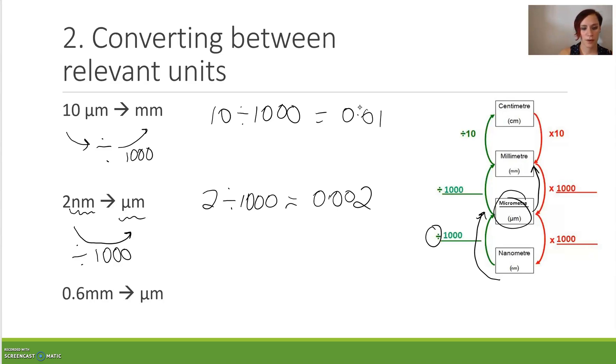Next one, we are going from millimeters to micrometers, which means we are going from a unit that is bigger down to the smaller unit, which means we are doing a multiplication sum this time. So we are going to have to go 0.6 times, and we know that there are 1000 micrometers in a millimeter, so times 1000. And that's going to give us 600.